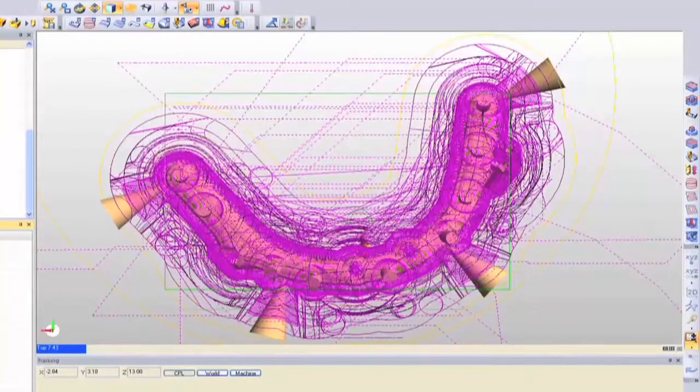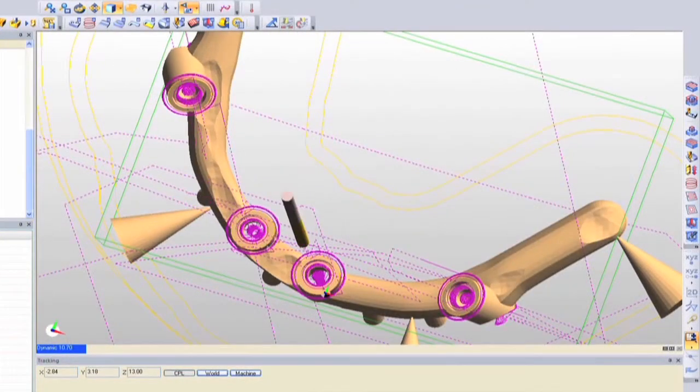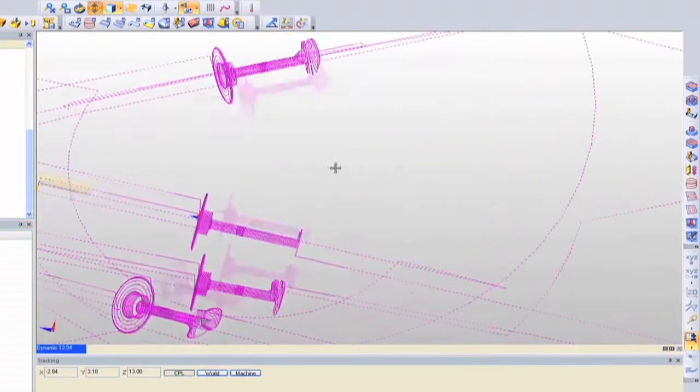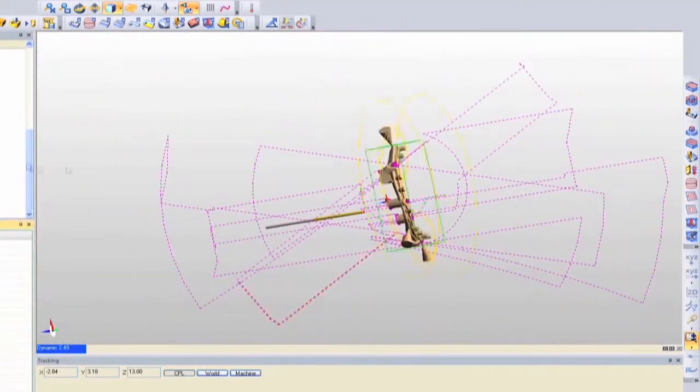The approved design file is then converted to a file type that can be executed by the milling software. That software runs a preliminary routine that nests the virtual bar within a digital blank and maps out the proper tool path.